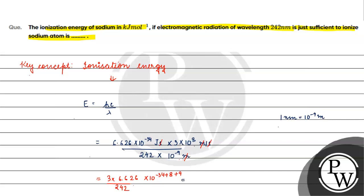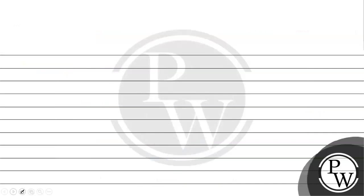Ye hamare paas kitna hoga? 19.878 × 10⁻¹⁷ by 242. 19.878 by 242 kitna hachega hamare paas? Ye almost aega 0.0821 × 10⁻¹⁷. Ye joules mein hai, par hame to kilojoules per mole mein chahiye ga. Ye ek atom ke liye ho chayega.